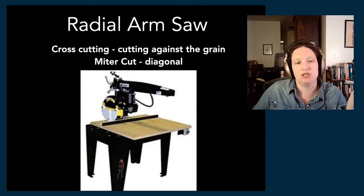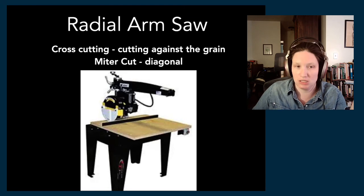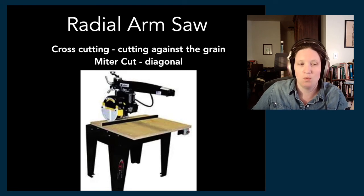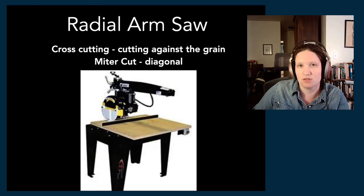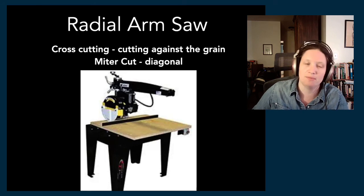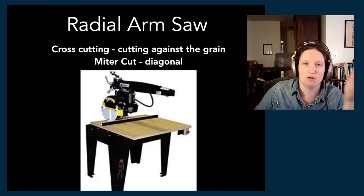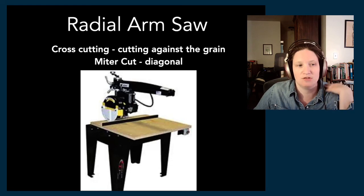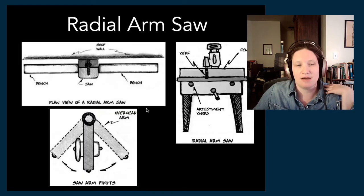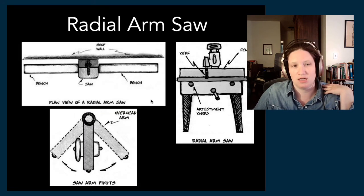The radial arm saw allows you to cross-cut — cut against the grain — and is typically used for stick lumber more than sheet goods. We don't have one anymore; they're less common now. Usually you'll use a miter saw and a panel saw and won't need a radial arm saw as often, so you don't see them as frequently in the shop anymore.